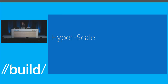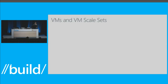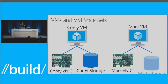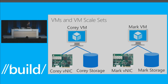So hyperscale — I'm going to start there. VM Scale Sets. The change we've really implemented over the last few months is thinking about scale with virtual machines in a very different way. Originally you'd spin up a VM, name it corey-vm, add a NIC, add storage — one by one. And then if you wanted another one, mark-vm with mark-NIC and mark-storage, making sure the same naming convention and executables were applied. Very cumbersome — imagine doing this 5, 10, 15 times.